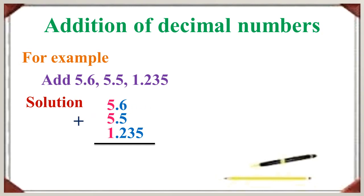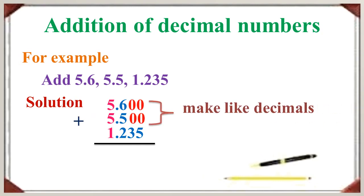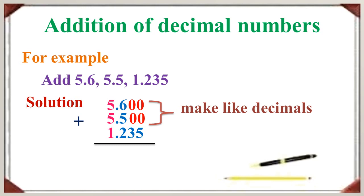So now we want to make them like decimals. We can add 0 to the right of the numbers. Now we are going to add 5.6, 5.5 and 1.235. What is the answer? Yes, that is 12.335.